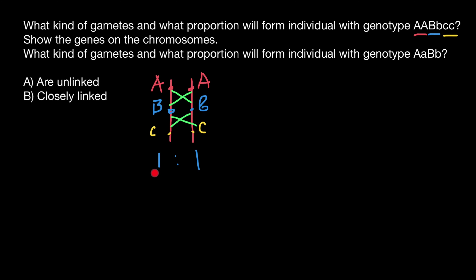The ratio is going to be the same. For the second question: what kind of gametes and in what proportion will an individual form whose genotype is heterozygous for gene A and heterozygous for gene B?